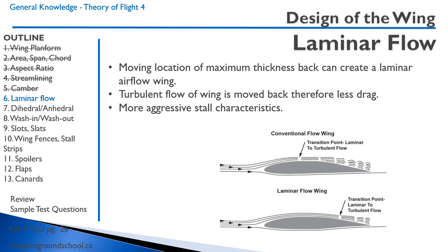When we talk about laminar flow, we are talking about flow that is smooth — not turbulent. Often on laminar flow wings, the maximum thickness is farther back, so the laminar-to-turbulent flow transition point is further aft. Laminar flow wings typically have lower drag, but have more aggressive stall characteristics.